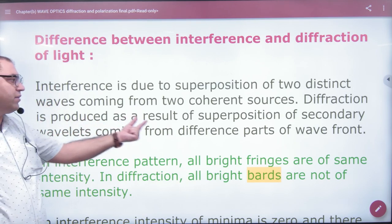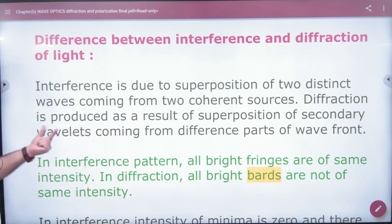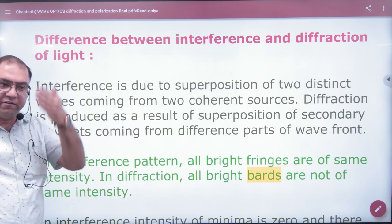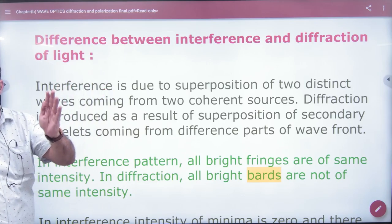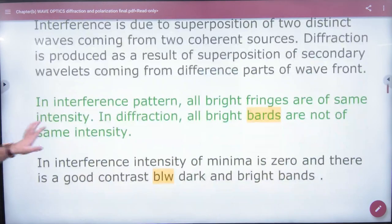Diffraction is produced as a result of superposition of secondary wavelets coming from different parts of wavelets. Here we have interference.